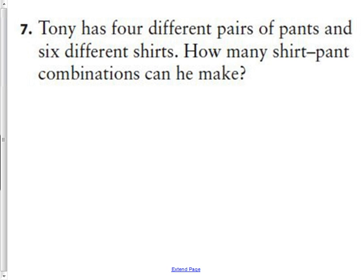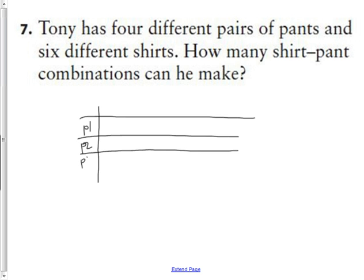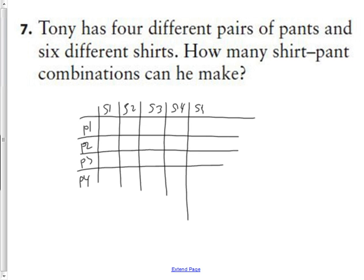Question seven says Tony has four different pairs of pants and six different shirts. How many shirt-pant combinations can he make? Now, some of you, when I looked at your diagrams or answers, some of you actually went and did pants one, pants two, pants three, and pants four and made one of these. I was only six, wasn't it? I would say that would be the worst choice to do. If I was doing something because there's only two, I would probably do this: I do pant one, pants two, pant three, and pant four. If you want to get creative, you can make them blue jeans and khakis or whatever.